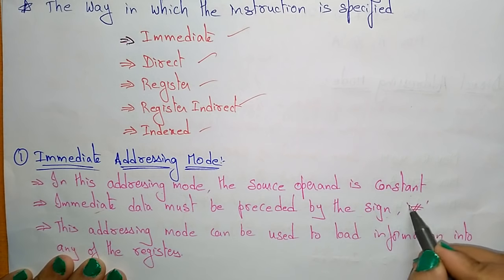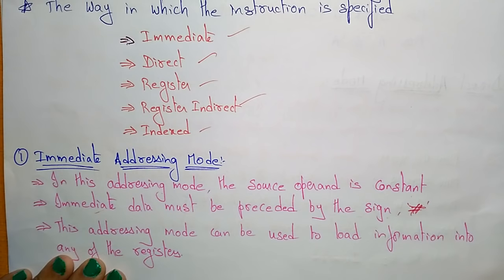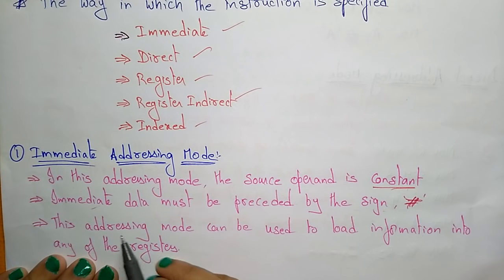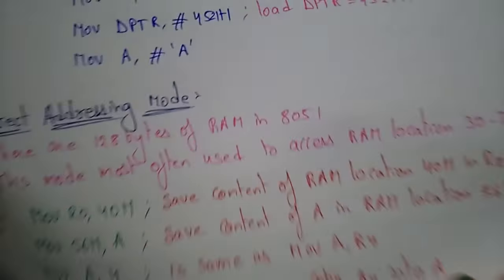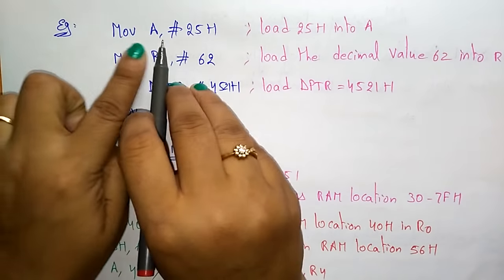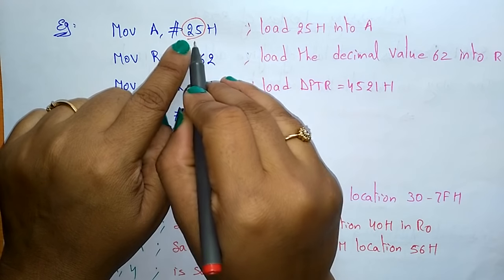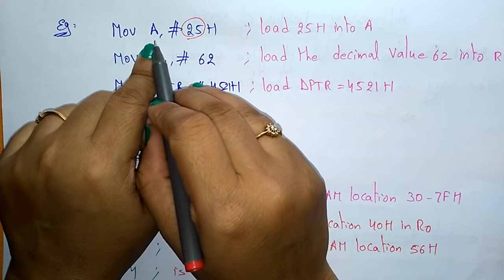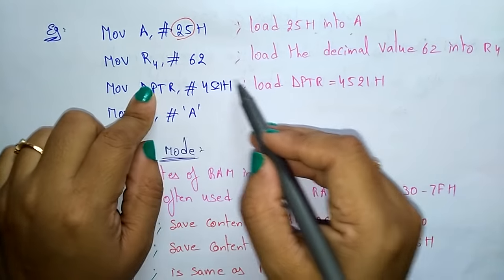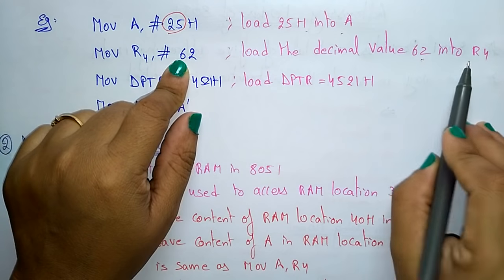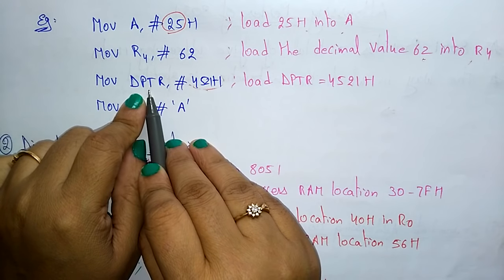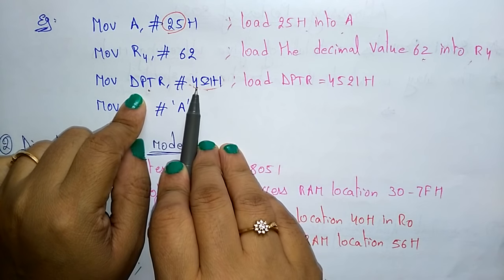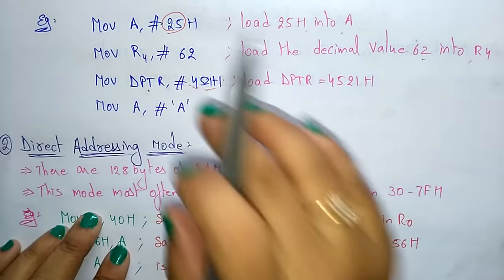Immediate data must be preceded with a hash sign. For example, MOV A, #25 — hash means it is immediate data, and 25 is a constant value. This addressing mode can be used to load information into any of the registers. For example: MOV A, #25H loads 25H into the accumulator A; MOV R4, #62 loads the decimal value 62 into R4; and a constant value can also be moved to the data pointer DPTR.